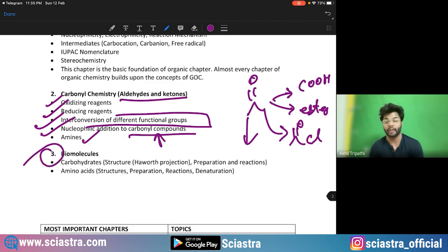Coming to biomolecules. This is a very easy, relatively easy topic. I think you should have knowledge about it, especially carbohydrates, Haworth projections, preparation and reactions. And this is very easy chapter. Biomolecules and amino acids. Amino acid is very, very important.